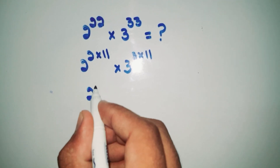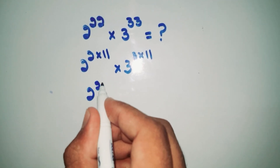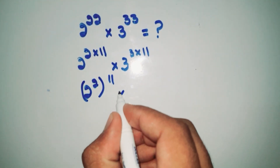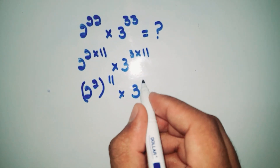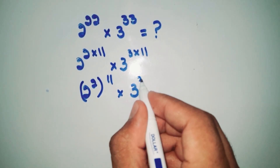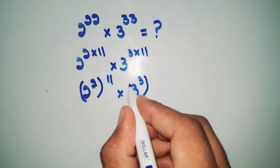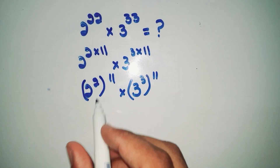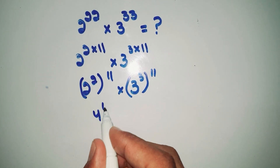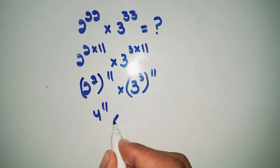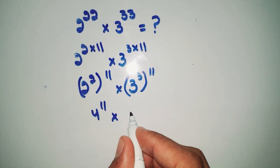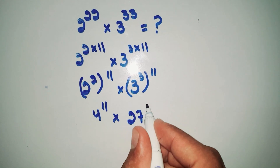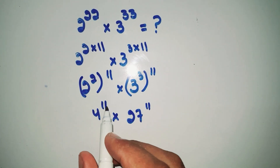Then, using the exponent rules, we write this as 2 power 2, whole power 11, multiplied by 3 power 3, whole power 11. Now 2 power 2 is equal to 4, so we get 4 power 11, and 3 power 3 is equal to 27, so we get 27 power 11.